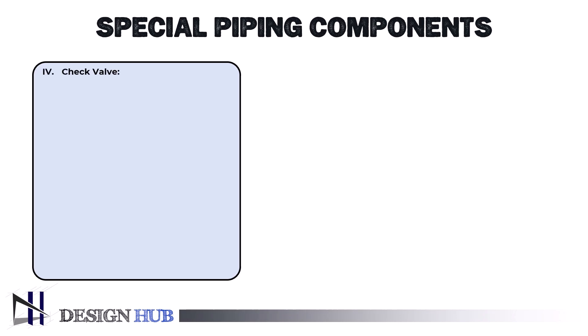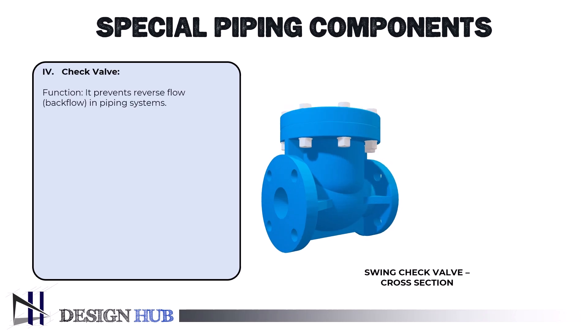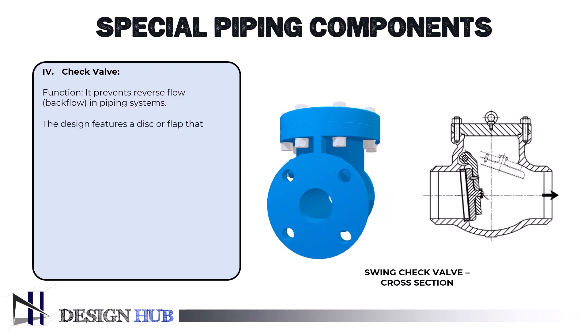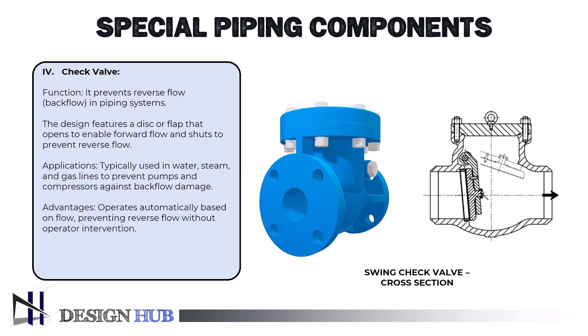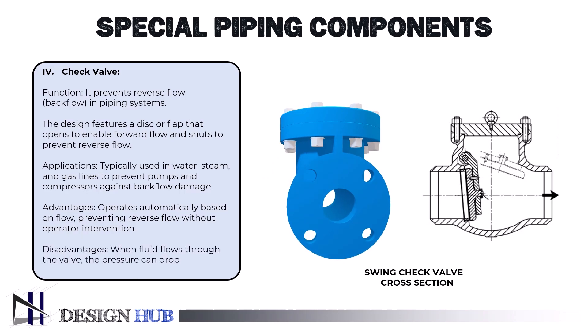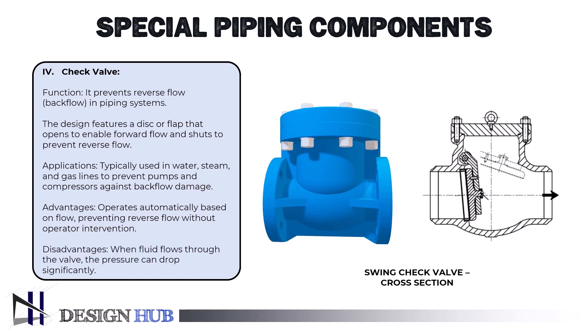The next one is a valve that typically only permits fluid, liquid or gas, to pass through it in one direction, known as a check valve, non-return valve, reflux valve, retention valve, foot valve, or one-way valve. Check valves are classified as two-port valves because they contain two ports in their bodies, one for fluid entry and one for fluid exit. Numerous check valve types are employed in a broad range of applications.